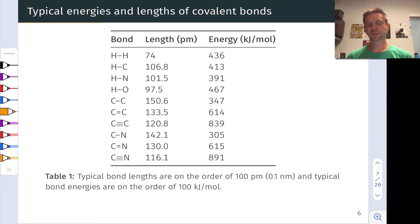This slide shows some typical energies and lengths of covalent bonds. I don't want to spend too much time on the numbers, but I'll just point out some general trends here. Notice that a typical covalent bond is on the order of 100 picometers, or 0.1 nanometers in length, and typical bond energies are between 100 and 1000 kilojoules per mole. We can also notice here a trend in bond length and bond strength, or bond energy, as a function of the number of linkages between the atoms.